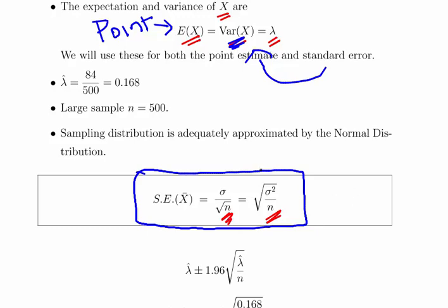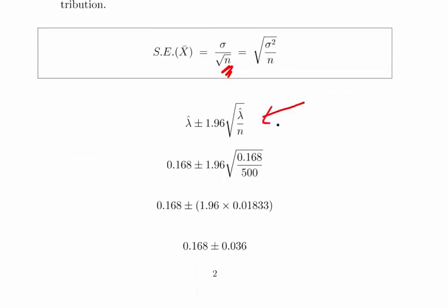So the variance, sigma squared, is lambda-hat. Our sample size n is 500.